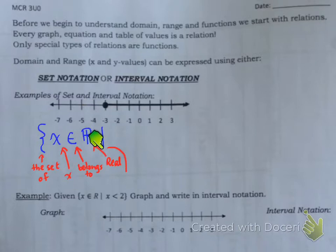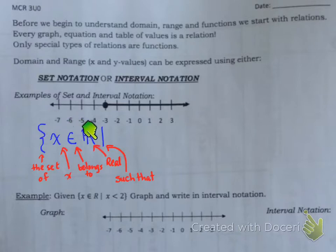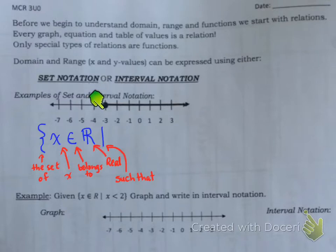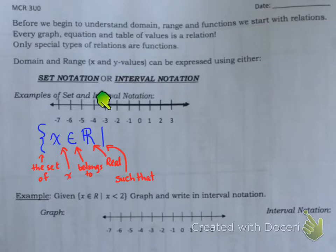Next, you have this thing, and this line here means such that. Basically, what that means is that there is a restriction - it is saying it's every real number in the world, such that some sort of restriction is placed. What is the restriction? Well, if we look here, we're starting at negative 3 with a closed circle and we're going to the right, and we keep going forever. So it starts at negative 3 and goes on forever in a positive direction - to infinity.